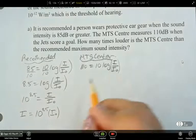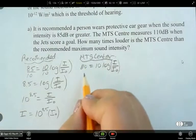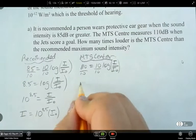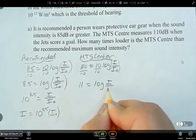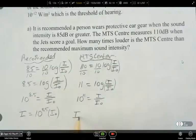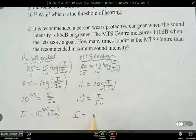Okay, now let's look at the MTS center one here. So divide both sides by 10. I've got 11 equals log i over i-naught. And then into exponential form, 10 to the power of 11 equals i over i-naught. And then i equals 10 to the power of 11 times i-naught.